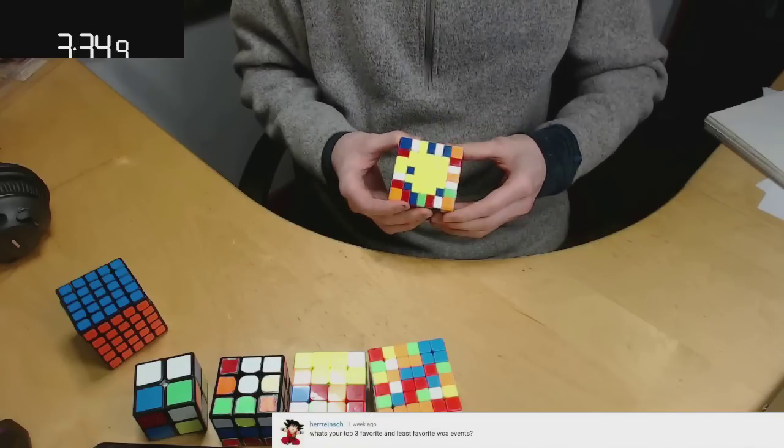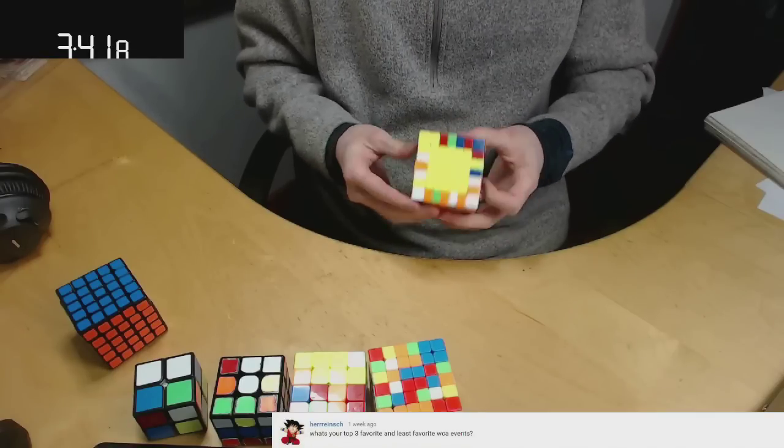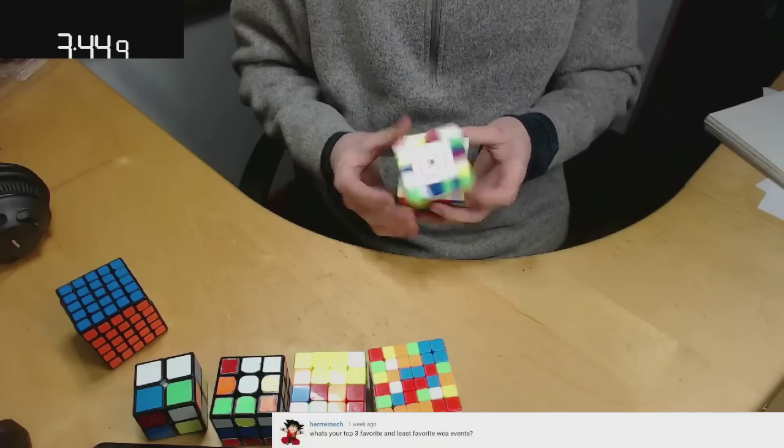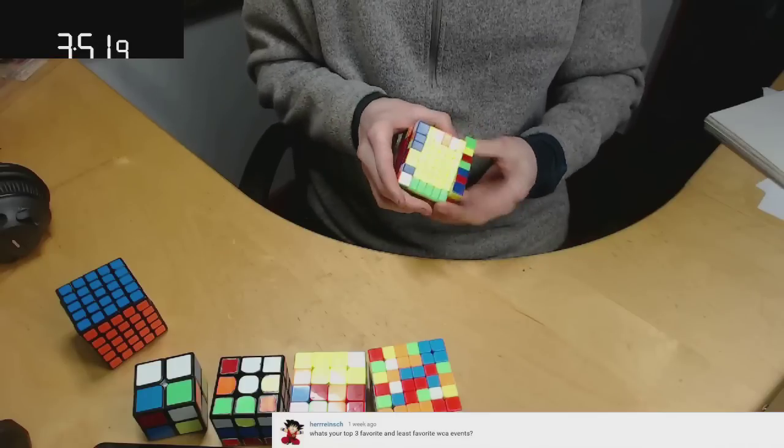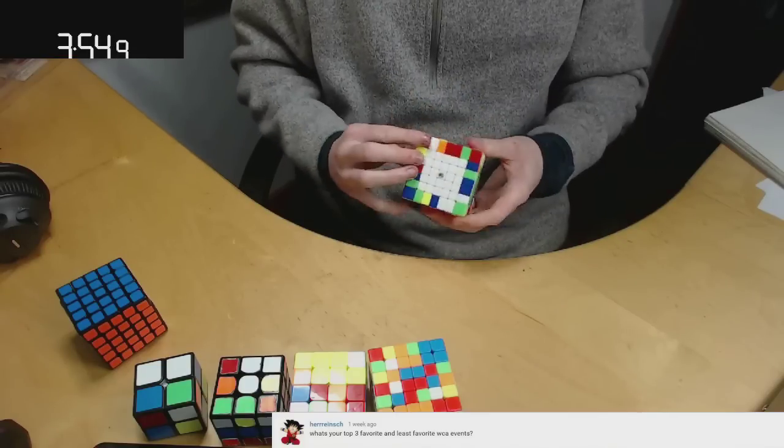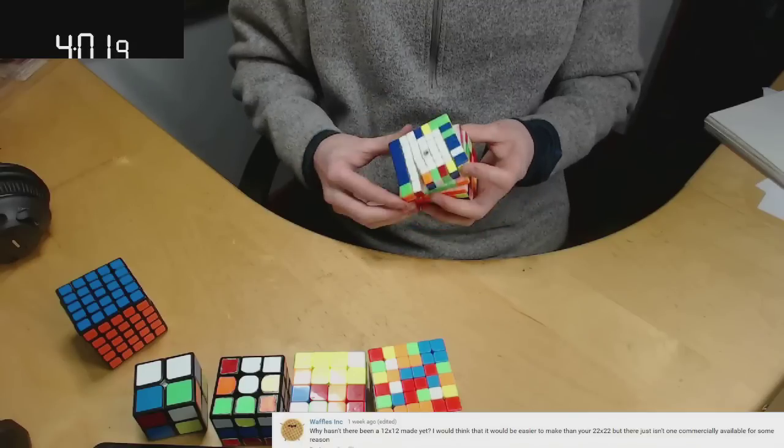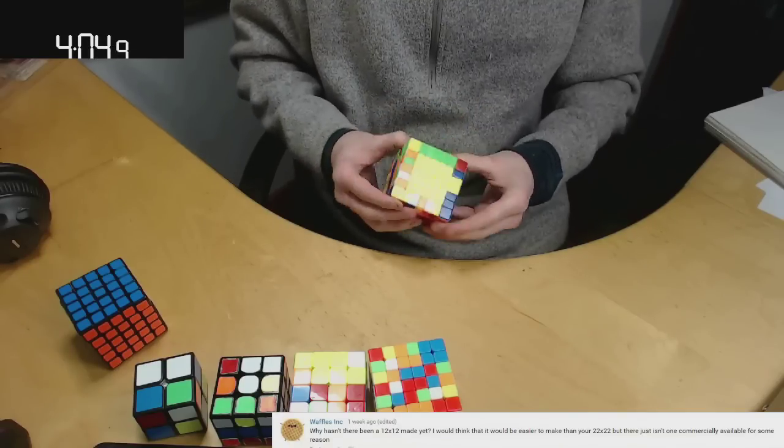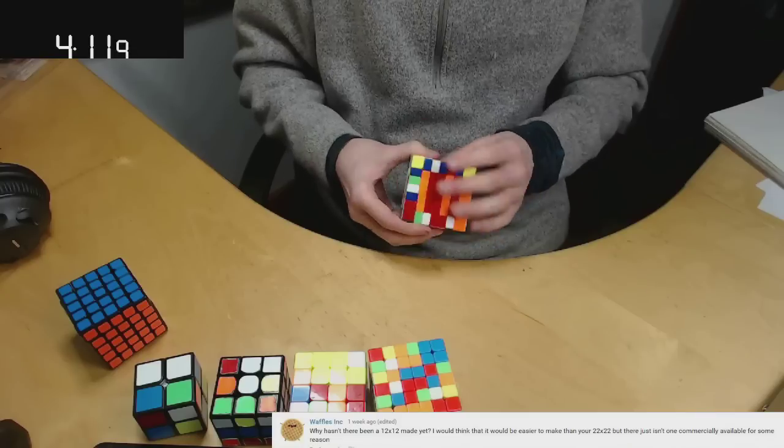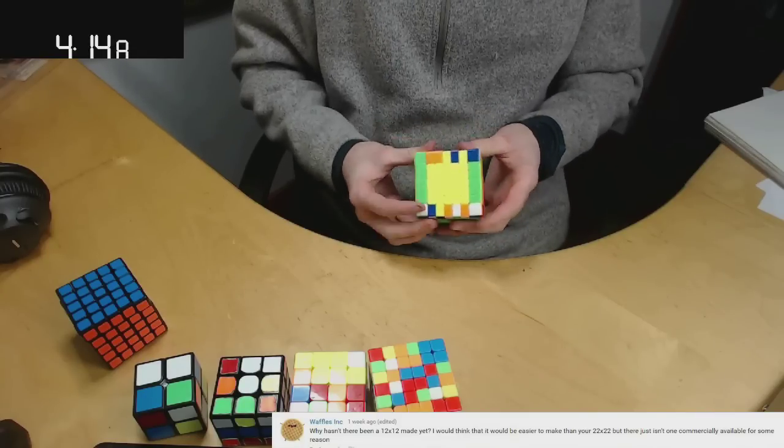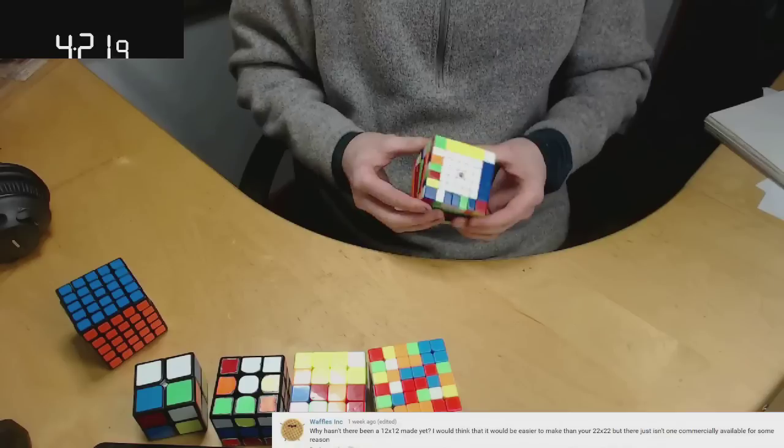What is your top three favorite and least favorite WCA events? So for favorites I probably have to go with Megaminx, 3x3, and 7x7. I really like those events. For least favorite I'd probably have to go with 2x2 and then 4x5 blind just because I really suck at 4x5 blind. Why hasn't there been a 12x12 made yet? I think that it would be easier to make than a 22x22, but it just isn't one commercially available for some reason. Funny thing is, this was posted about a week ago and just the other day I saw that Very Puzzle is going to be making a 12x12. They already have a prototype so it's gonna be commercially available very soon.